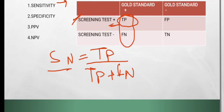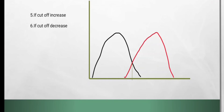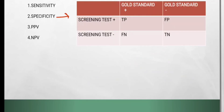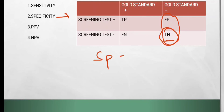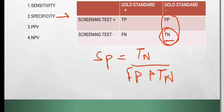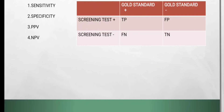For a screening test they should have a high sensitivity, and for the gold standard they should have a high specificity. Now let's talk about specificity. Specificity is the ability to correctly identify all those who don't have the disease. Those who don't have the disease and the screening test correctly identified them as testing negative. The formula for specificity will be: true negative divided by false positive plus true negative.